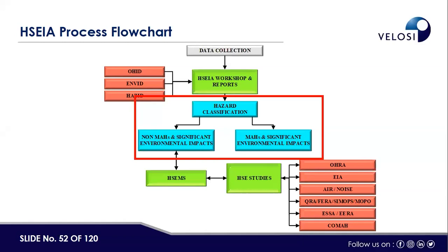Once we carry out the HSEIA workshop, we classify hazards as non-MAH and non-significant environmental impacts (managed through HSEMS) and MAH and significant environmental impacts (further assessed through OHRA, EIA, and COMA). All major and significant environmental impacts need further assessment through studies like OHRA, EIA, and COMA — which will be explained in the upcoming slides.